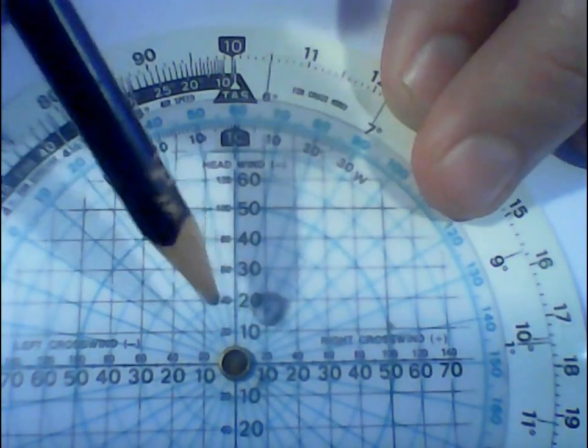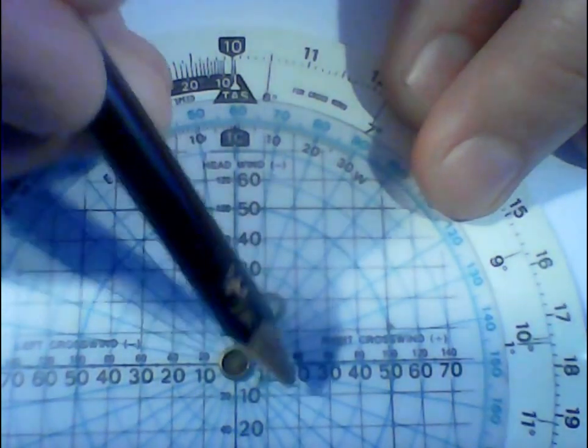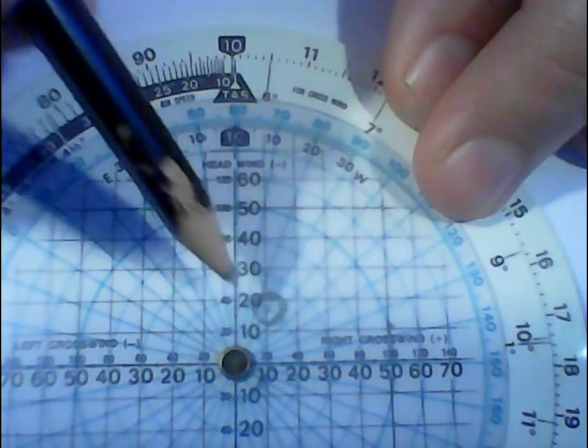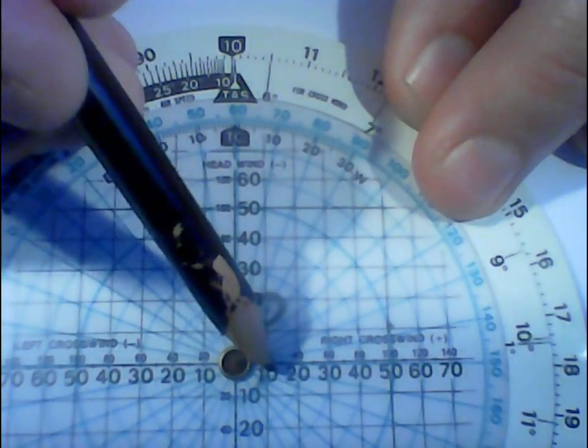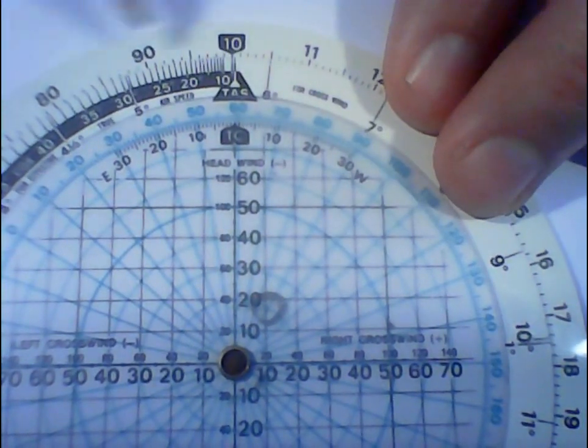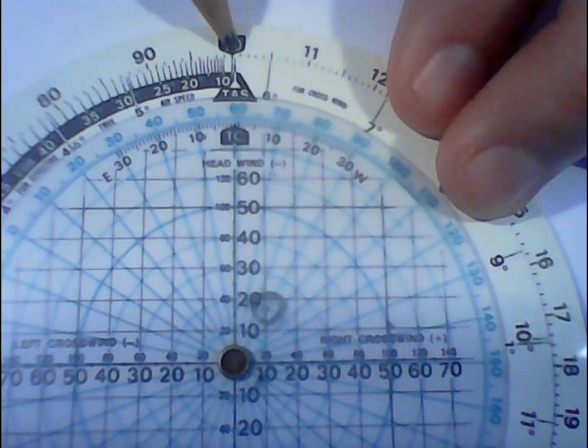Okay, so what we need to do then is read off this column to see what sort of sidewind component there is. Now in this case it's basically 10 knots.